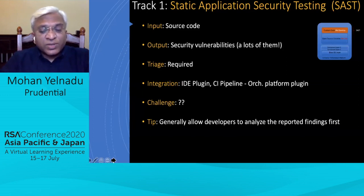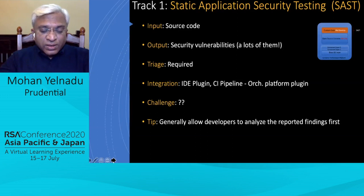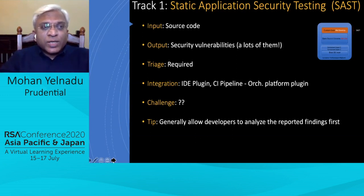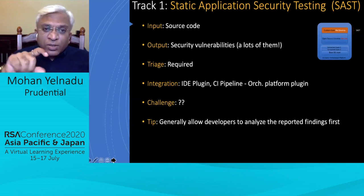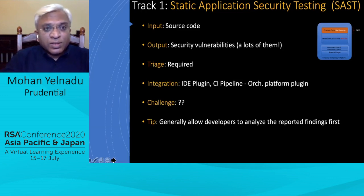A tip for SAST: allow development teams to go through reported findings first, then have the security consultant review. Developers know their code, and they are large in number — roughly one security consultant for every 200 developers. Let them identify potential false positives first, then discuss those specific items. If you agree, mark them as false positives or not applicable; if not, help them understand what needs fixing and provide guidance on remediation.